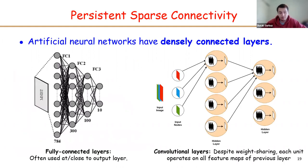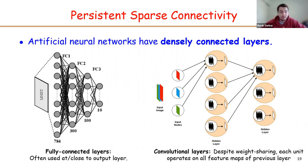Unlike their biological counterparts, artificial neural networks have dense connectivity. Here I share two of the main building blocks for most deep learning architectures. First, fully connected layers — as their name suggests, they are fully connected between layers, so layers are densely connected. On the right, we have convolutional layers. Despite weight sharing, they are conceptually dense because each unit operates on all feature maps of the previous layer.